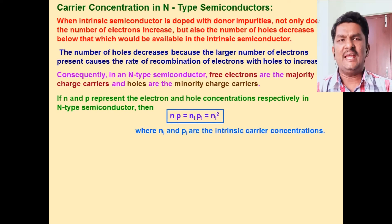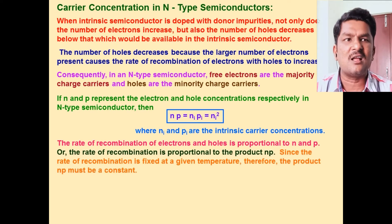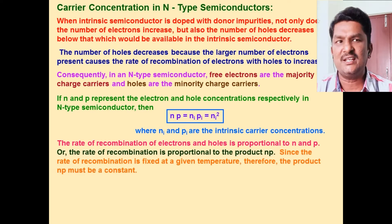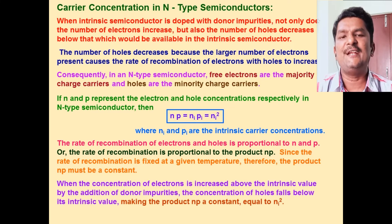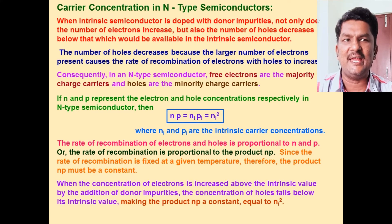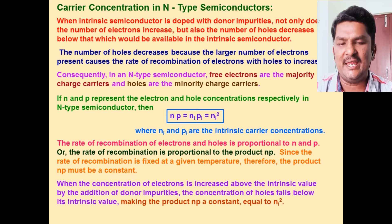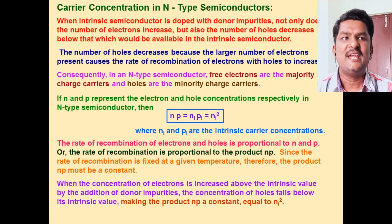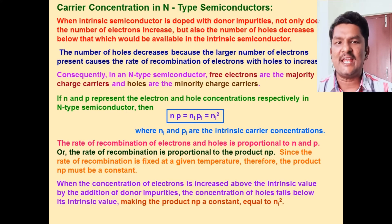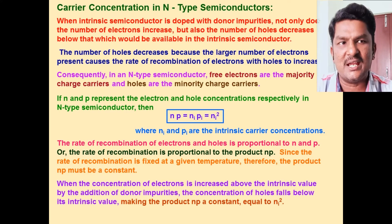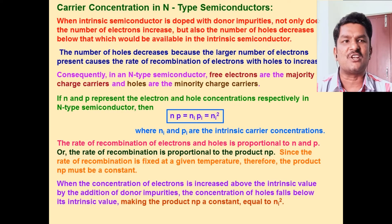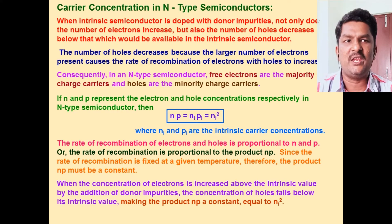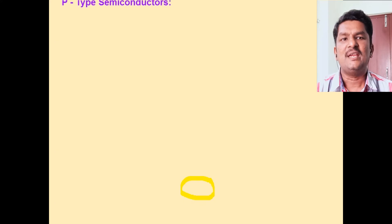Here, n represents the electron concentration and p represents the hole concentration. So n × p = ni × pi, where ni and pi are both intrinsic carrier concentrations. Therefore, n × p = ni².